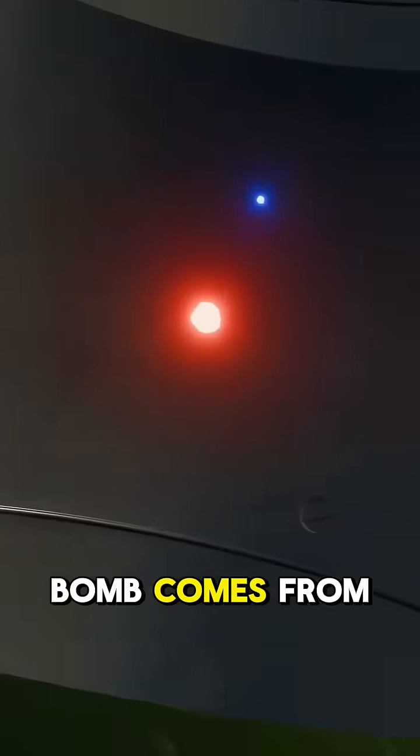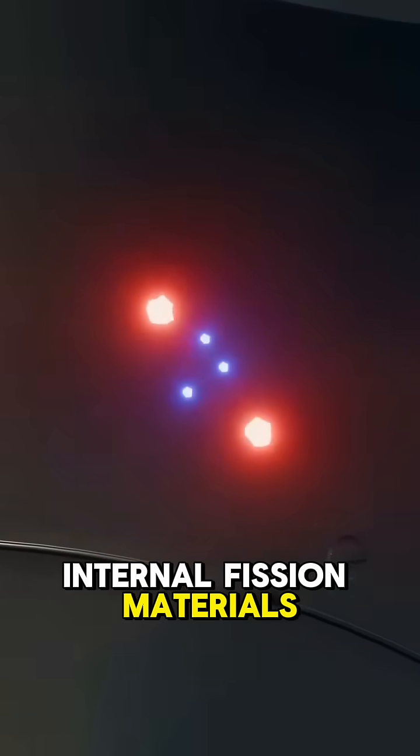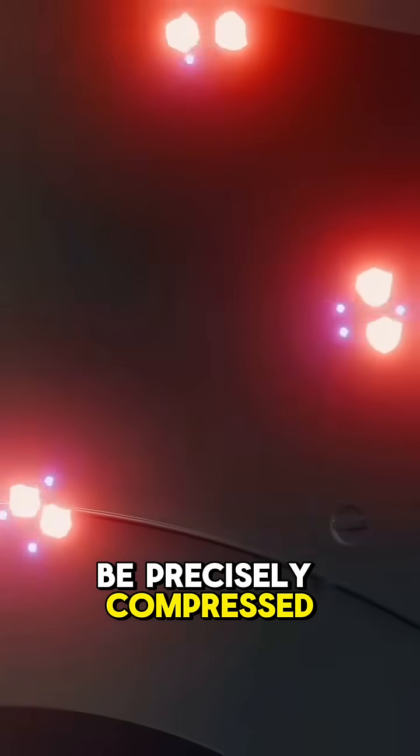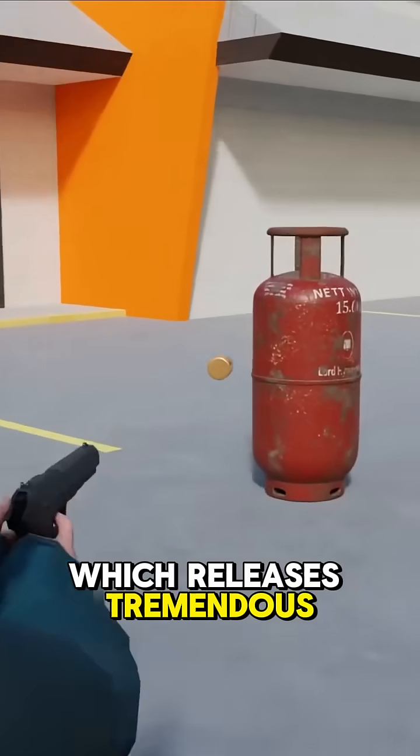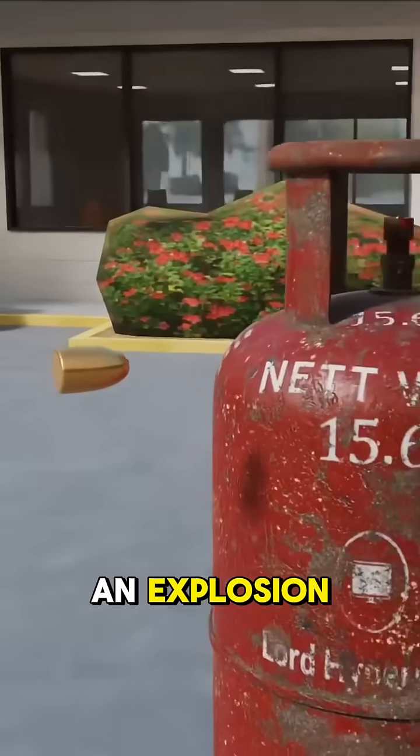The real power of a nuclear bomb comes from its internal fission materials. These materials must be precisely compressed together to start the controllable chain fission reaction, which releases tremendous energy and causes an explosion.